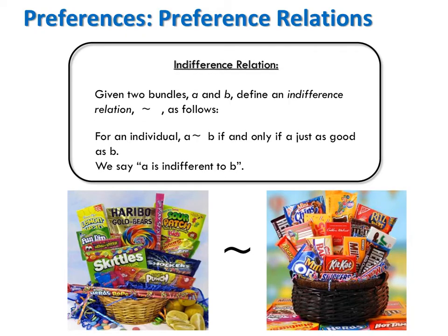Other rankings might fall into the category of an indifference relation. That is, given two bundles, we define an indifference relation as follows: for an individual, A is indifferent to B if and only if the person likes the two equally — she or he is indifferent between them. For example, some of you might look at these two bundles of candy and conclude that you would have been just as happy with either, so you would be indifferent between them.